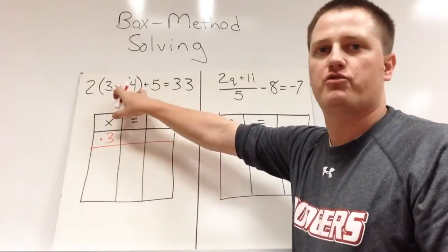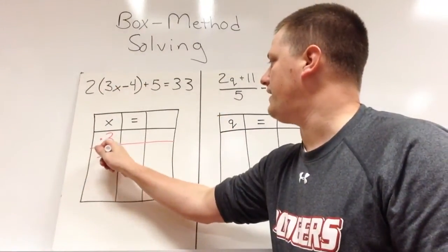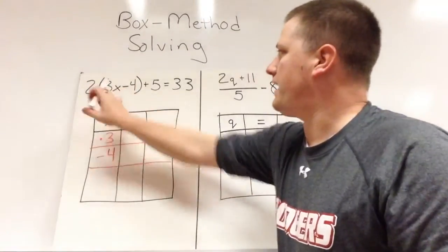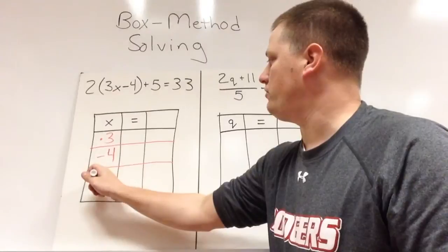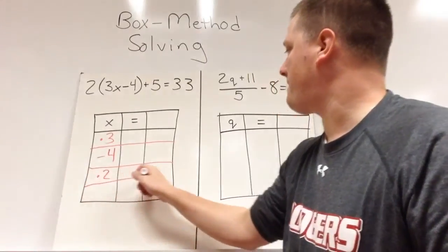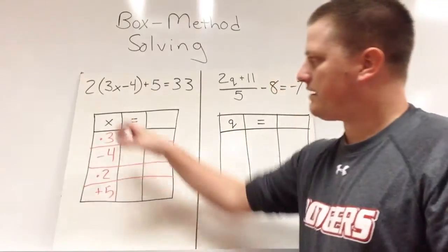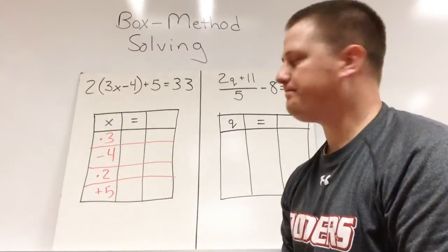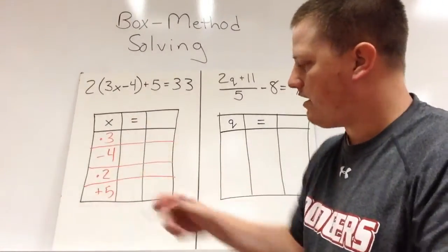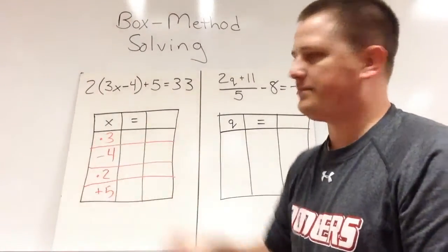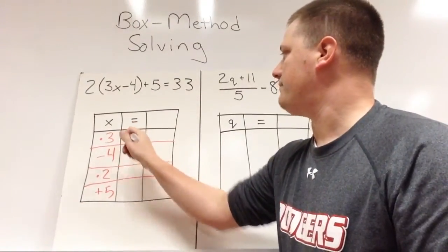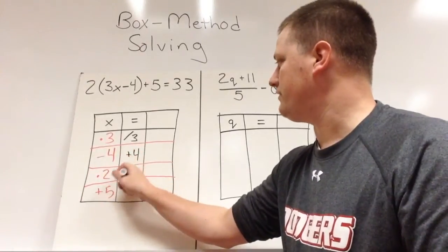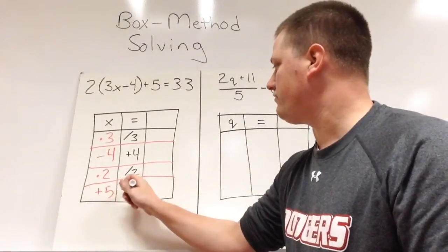After we've multiplied by three, we want to subtract the four. So that's going to be second here. After we've done the math inside this parentheses, we have multiplication by two and adding five left. So the multiplication by two would be next, and then we have adding five at the end. Basically we went through and determined what would be, if we knew what x was, what would we do to it first? Now what we do is we put in all our opposites in the middle column here. So the opposite of timesing by three is dividing by three. The opposite of subtracting four is adding four. Opposite of timesing by two is divide by two. The opposite of adding five is to subtract five.